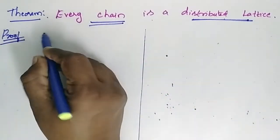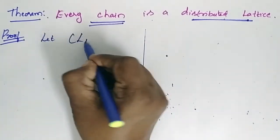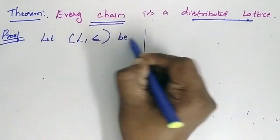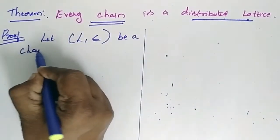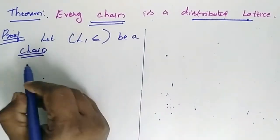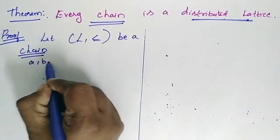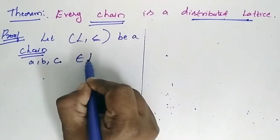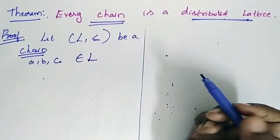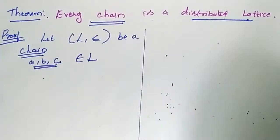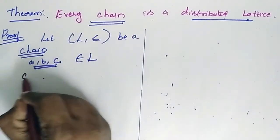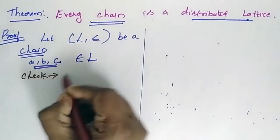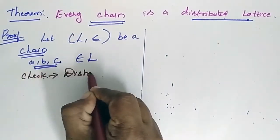Let lattice L be a chain. Let ABC belongs to L. We should check out whether the distributive law holds.